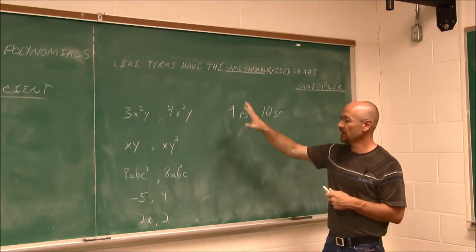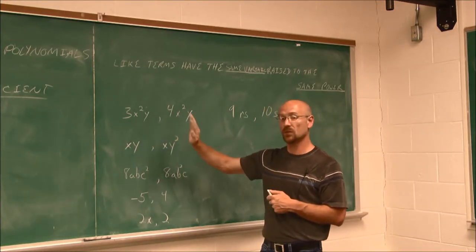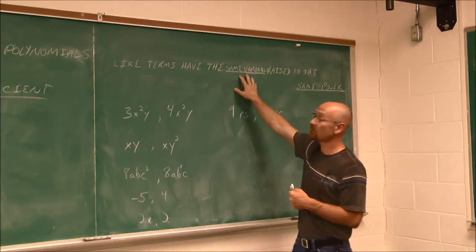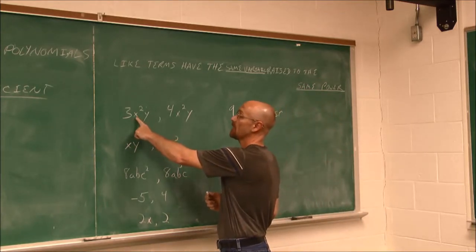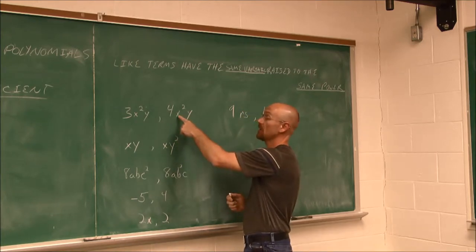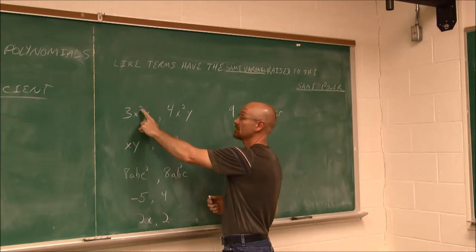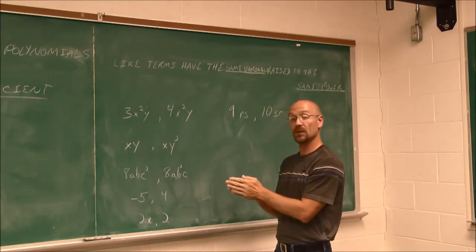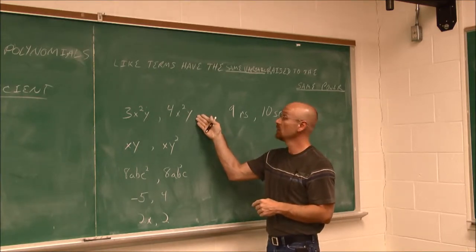Let's identify if these are like terms. The coefficients don't matter at this point — we just want to ask: do they have the same variable and the same power on those variables? Here I have x squared times y, and here I have x squared times y. They both have x and y. The x is squared for both of them, and the y is to the first power. Since they have the same variables with the same powers, this would be like terms. So these are like.